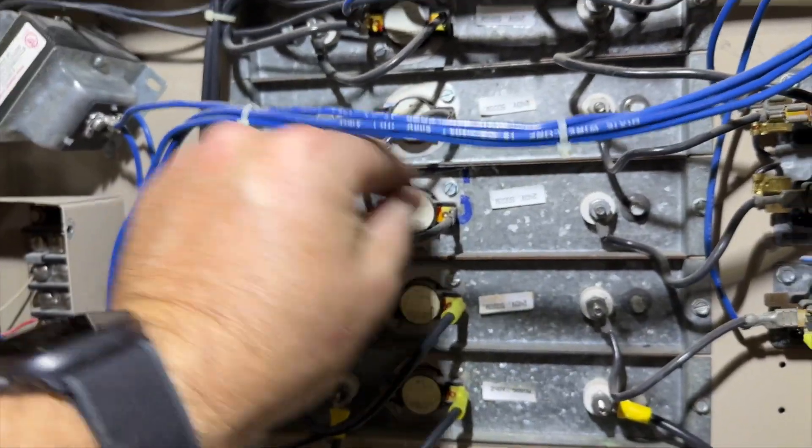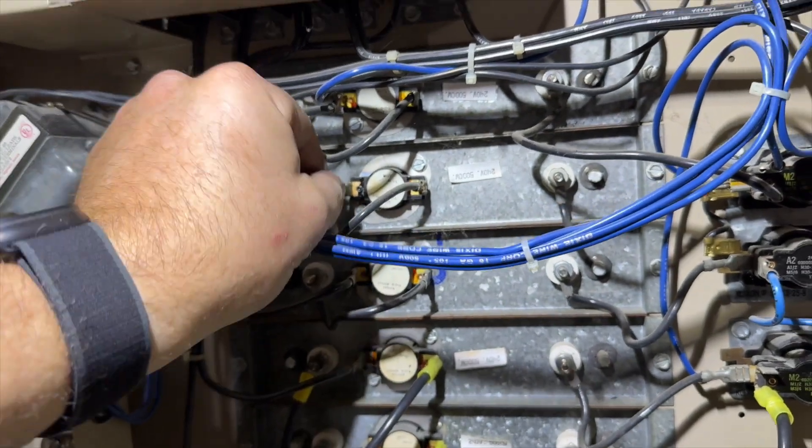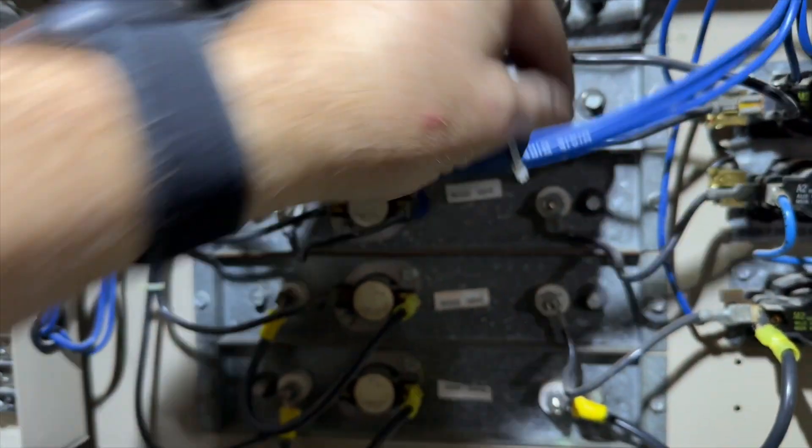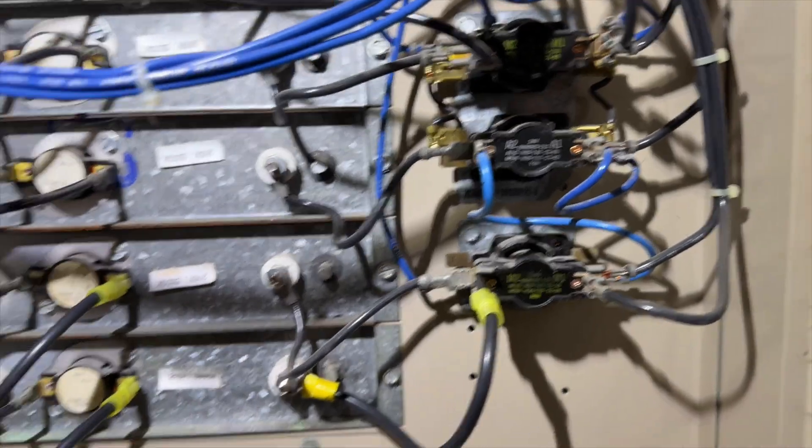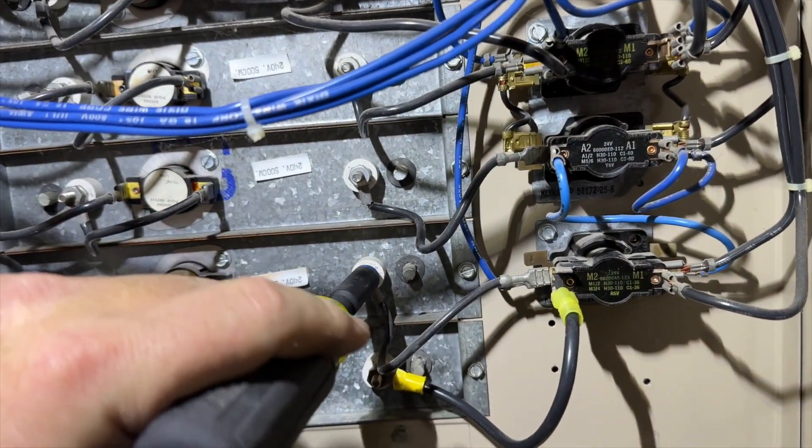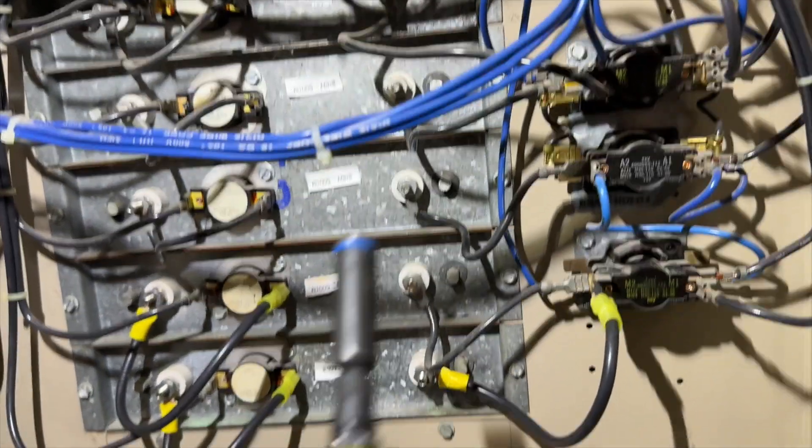I'm gonna just make sure all this other stuff is tight, because usually when you got loose stuff, that's when you get melted wires. These are three-eighths, so we can use that to tighten them up if you have aluminum on.